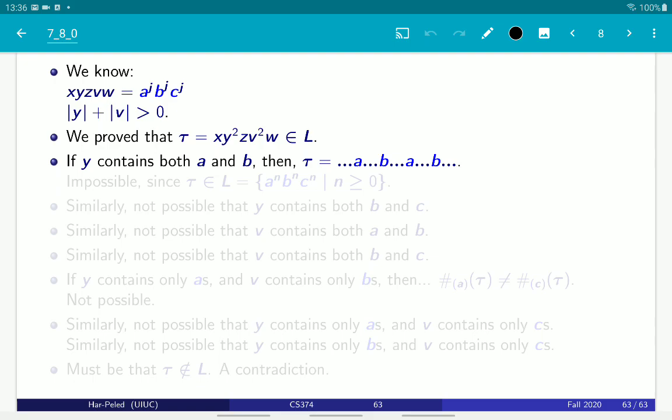And the question is essentially, what does the string y and v are being mapped to? So, if y and v contains both characters a and character b, then the new string tau, since it has y squared, it's going to have some characters, a character a, some characters, character b, some a and b. And that's not possible, because that definitely is not in the language a^n b^n c^n. So, that's not possible. So, y cannot contain both a and b.